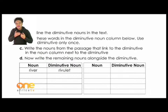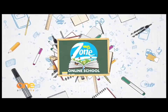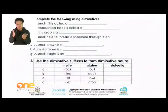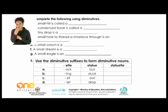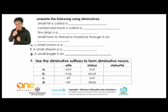Welcome back, boys and girls. Let's go to page six of our booklet. Activity Four says: 'Complete the following using diminutives.' A small hill is called a hillock; a condensed book is called a booklet. From C to G you can complete that on your own. Let's quickly move on to Activity Five.